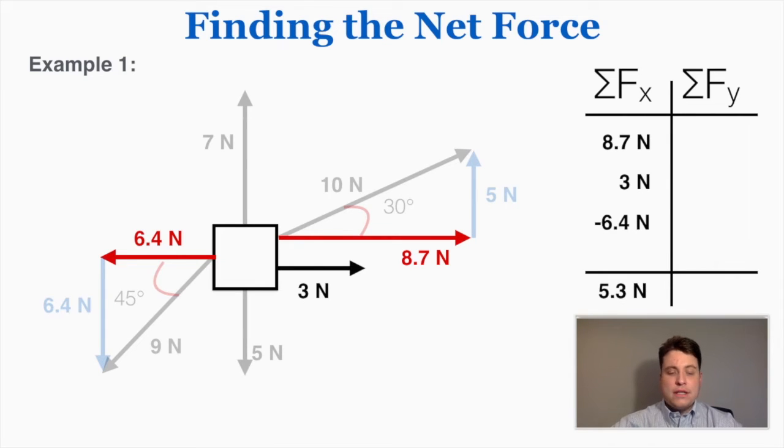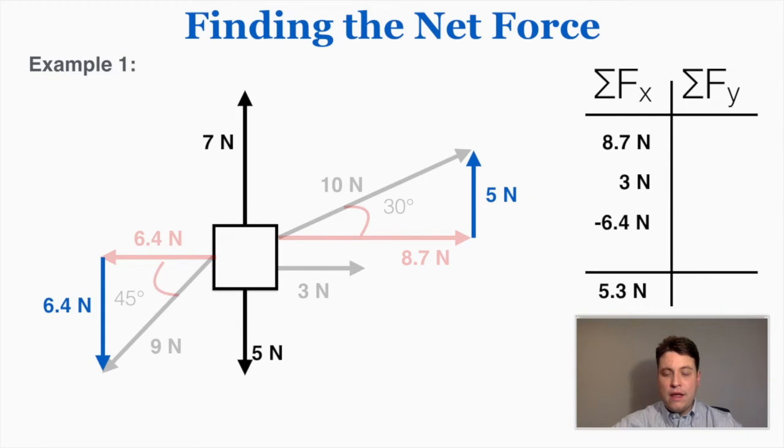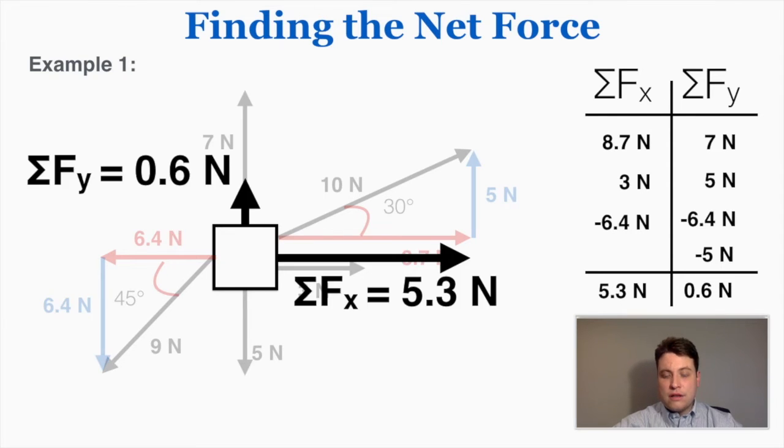That means that all the things happening in the x-direction are adding together into a single force that has a magnitude of 5.3 newtons to the right. Now if I look at the y-direction, I'm going to consider up to be positive. So I'm just going to take everything that's happening in the y and put it on the table. I have 7 going up, 5 going up, 6.4 going down so that's negative, and 5 going down so that's also negative. This comes out to be 0.6 newtons when I add these forces together. So altogether there's an upward force of 0.6 newtons when I add all the things in the y-direction together. That means all of these forces are behaving like a single x-direction force of 5.3 to the right and a single y-direction force of 0.6 up.